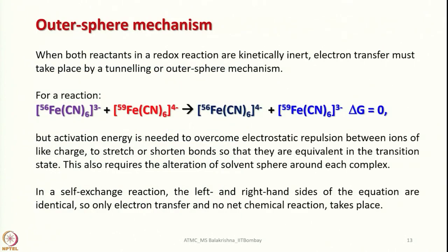Now with this, let us look into the outer sphere mechanism. When both reactants in a redox reaction are kinetically inert — both low spin complexes — electron transfer must take place by a tunneling or outer sphere mechanism. We do not have any ligand to establish a covalent link between two metal centers, yet the electron must go from one to the other. The reducing species gets oxidized and the oxidizing species gets reduced without establishing a covalent linkage — this is the outer sphere pathway.